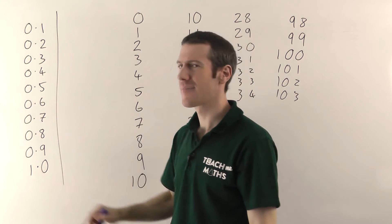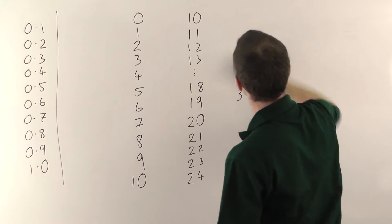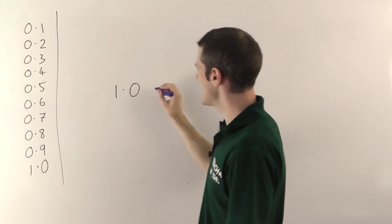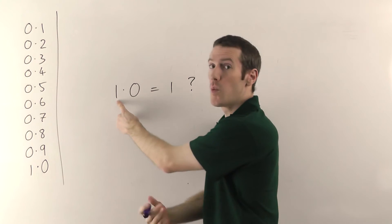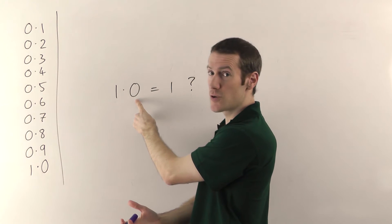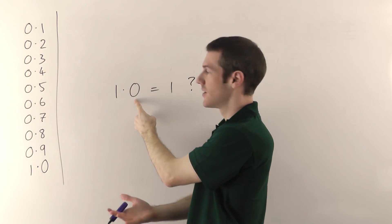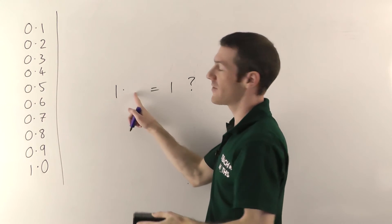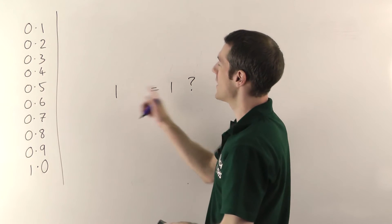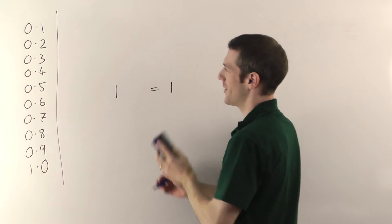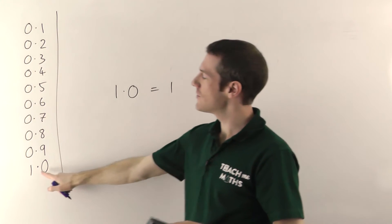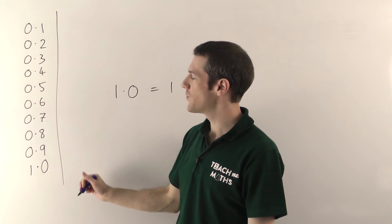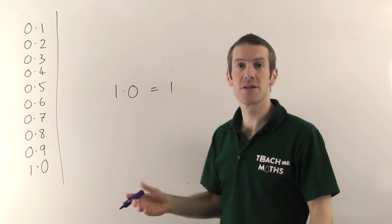Is 1.0 the same as 1? Well, you've got 1 in your units column and 0 in your tenths column — 1 unit and no tenths. If you don't have any tenths, that doesn't do anything for you, so it may as well not be there. And if you don't have anything after the decimal point, you don't need the decimal point either. So yes, 1.0 is exactly the same as 1. It's not wrong to write the point 0, but you need to appreciate they are the same. Zeros after the decimal point don't do anything.